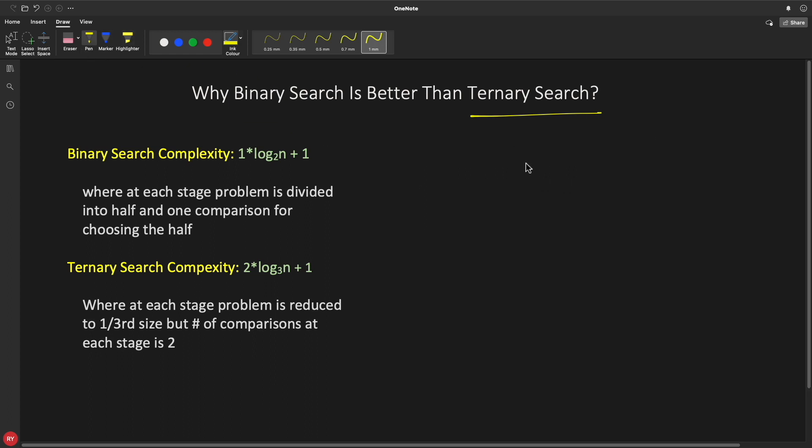Actually if you look at the program you will find that in binary search you have two comparisons. One is actually you will compare whether the element is found or not. If it is found then it is done. Otherwise where will you go - left or right.